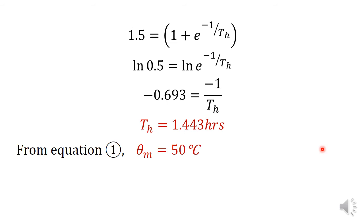Substituting th back into equation 1 or equation 2, we obtain the value of theta_m as 50 degrees Celsius. So the final steady state temperature rise is 50 degrees Celsius and the heating time constant th is 1.443 hours. These are the two values required for the first part of the question.